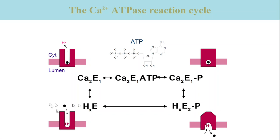Calcium binds from the cytoplasm of muscle cells to the high-affinity binding sites of the ATPase, which releases protons from the empty calcium binding sites. This activates the ATPase to use ATP as a substrate. ATP transfers its terminal phosphate group to residue aspartate 351, which leads to the formation of a first phosphoenzyme intermediate calcium-2-E1P, where the two calcium ions are occluded — meaning they are buried and not accessible from either side of the membrane.